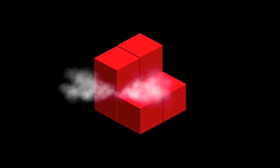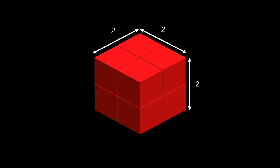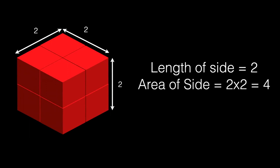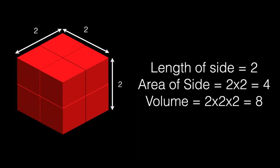Let's double the size of our original cube. We can build our double-sized cube with one-unit cubes. We now have a cube with length, width, and height of two units each. The area of each side is two times two, or four square units, and the volume is two times two times two, or eight units in volume. The size doubled, the surface area got bigger by a factor of four — two squared — and the volume increased by a factor of eight — two cubed. Notice that the volume is growing faster than the surface area.